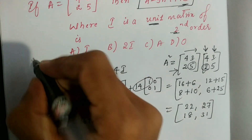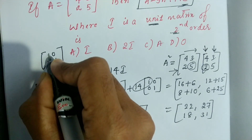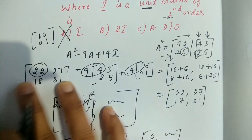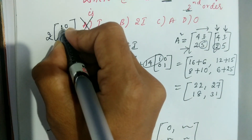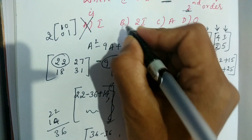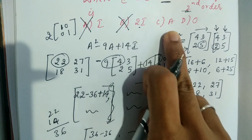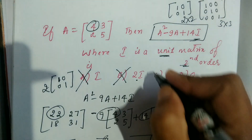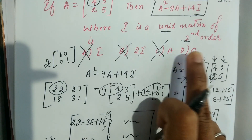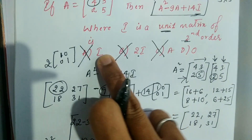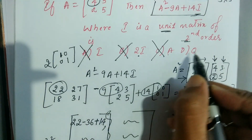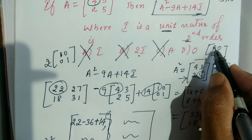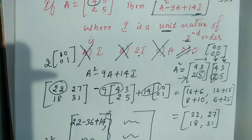After computing A² − 9A + 14I, all entries work out to 0. So the answer is the zero matrix, which corresponds to Option D: 0.